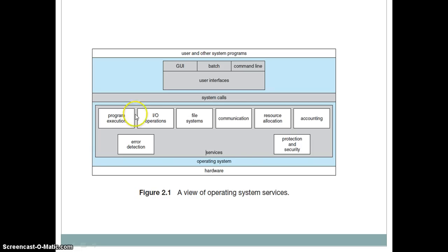An interface is a means through which a user inputs a command to the system in order to get their task done. There are a number of interface types — for example, graphical user interface, batch interface, and command line. You may have had a chance to input a command through a command line console, such as MS-DOS or a Unix shell. These are command line interfaces where you use your keyboard to enter commands to request the operating system to provide specific resources.